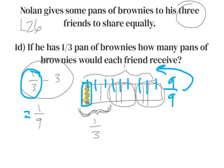Remember that when you start with a fraction and you divide it by a whole number, your answer is getting smaller and smaller, because Nolan kept giving his friends a smaller and smaller part of the pan to share.